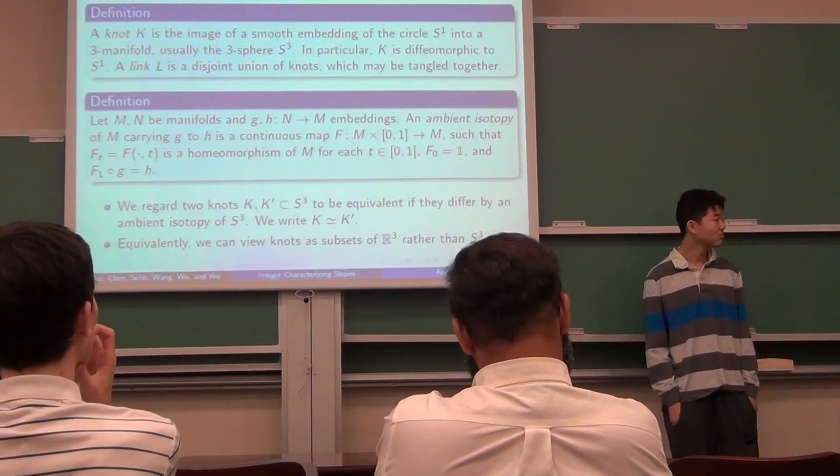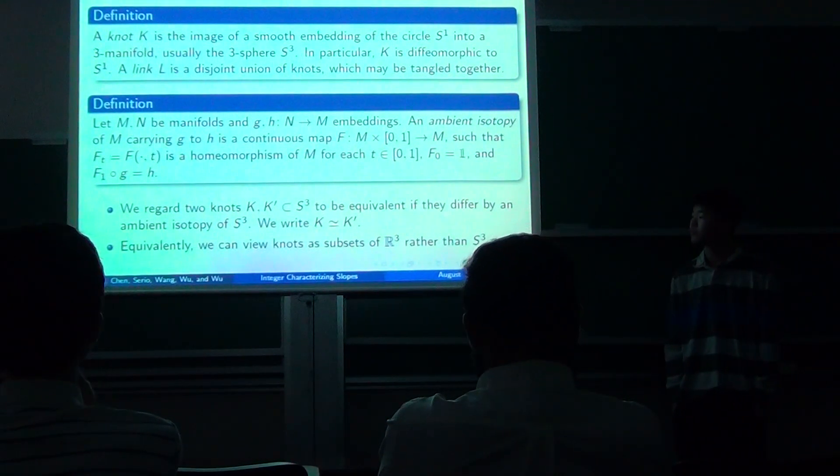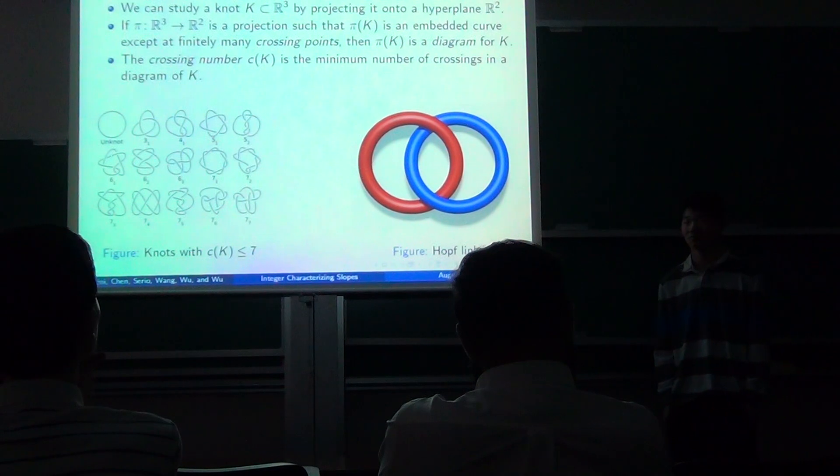We distinguish knots up to ambient isotopy, which basically corresponds to continuous deformations. We study knots using diagrams, which we get by just projecting them onto two-dimensional hyperplanes.